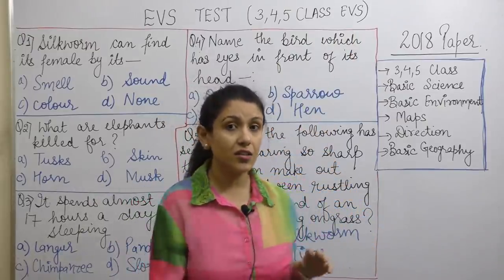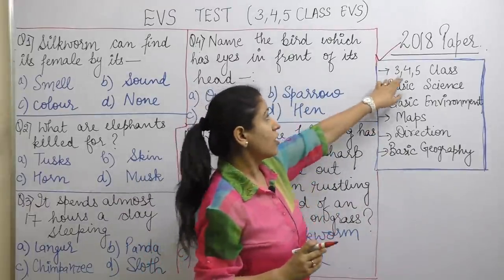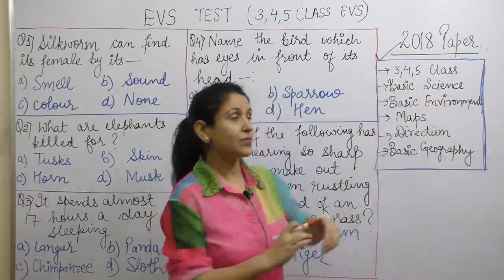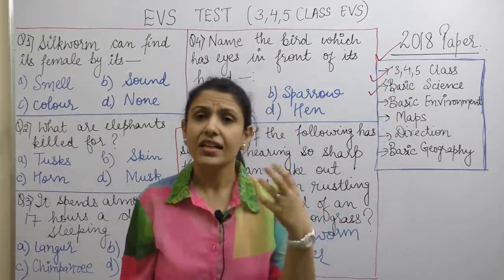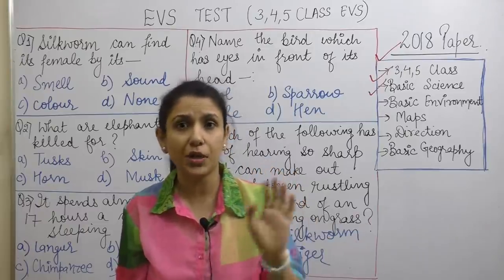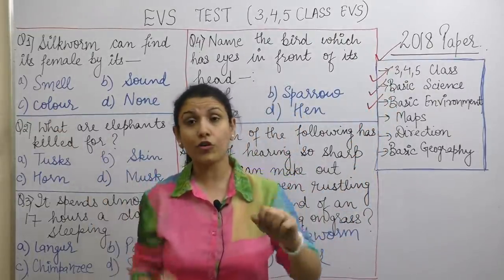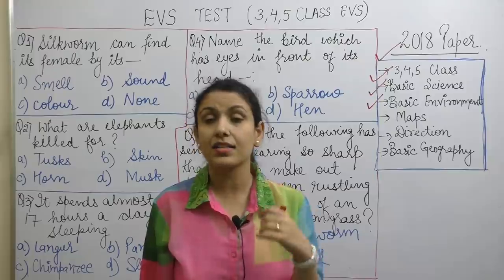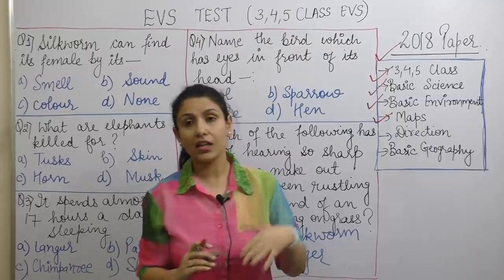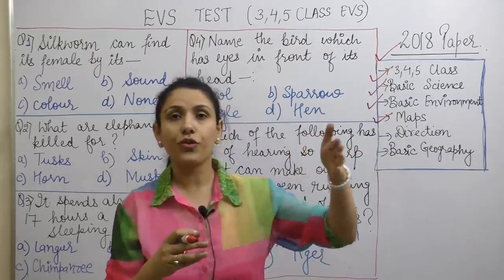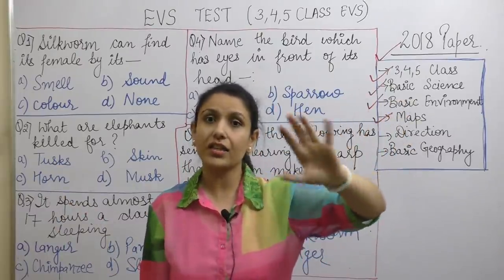In this paper, there were 3-4 questions from the 3rd, 4th, 5th class. There were 5-6 questions in your basic science, like density, pressure, temperature. Then your basic environment-related overall knowledge — greenhouse gases, acid rain, etc. There was also a question on maps, asking where it goes from here.